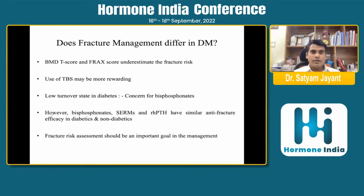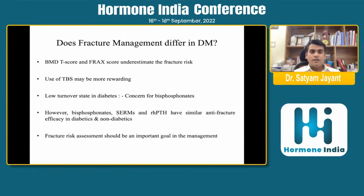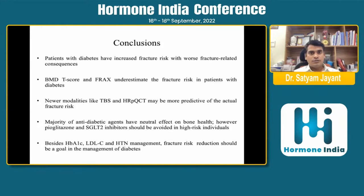Is fracture management different in diabetic patients? Yes — BMD and FRAX score underestimate fracture risk in type 2 diabetic patients, and use of TBS (trabecular bone score) may be more rewarding. The low bone turnover state in diabetes raises concern for bisphosphonate use; however, bisphosphonates and recombinant PTH have similar anti-fracture efficacy in diabetic patients compared to non-diabetics.